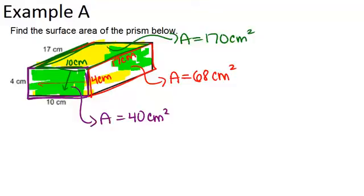So what we're going to do now is add all of these up, but then remember that each of them had a partner, so we'll multiply our whole answer by 2 in order to count for all 6 faces. When we add them all up, we get 278 centimeters squared.